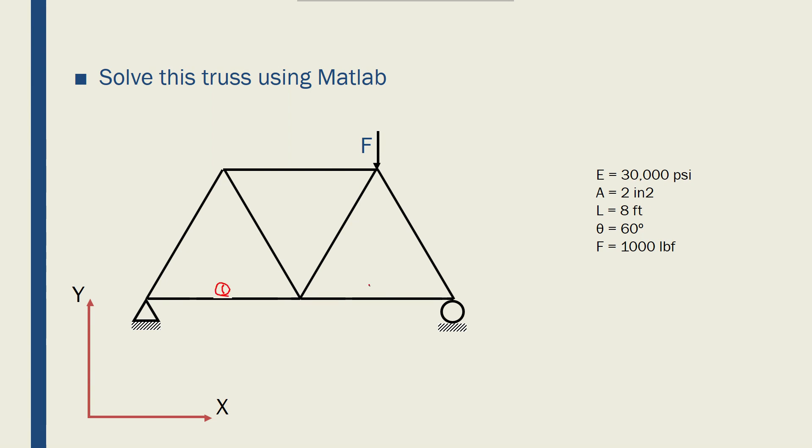So this would be my element 1, element 2, element 3, element 4, and then I have the fifth one here, element 6, and element 7. And I would have five nodes: 1, 2, 3, 4, 5.